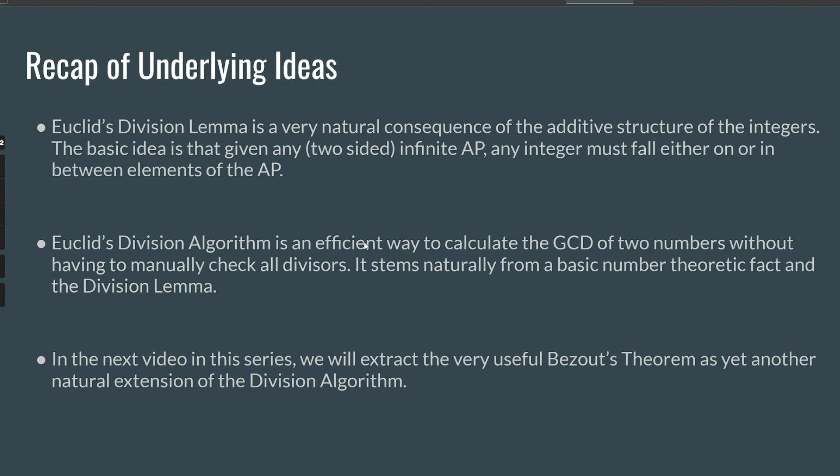And we'll try to recap all the underlying ideas. Euclid's division lemma is a very natural consequence of the additive structure of integers. The basic idea is that given any two-sided infinite AP, any integer must fall either on or in between elements of the AP. Euclid's division algorithm is an efficient way to calculate the GCD of two numbers without having to manually check all the divisors, which is what a naive algorithm would be. Just check all the common divisors and look at the maximum of that set. But the division algorithm that Euclid devised is actually far more efficient. It stems naturally from a basic number theoretic fact, which is that d divides a and d divides b implies d divides a minus b. We look at smaller and smaller numbers. And the division lemma guarantees us that we can keep doing this. In the next video in this series on number theory, we will extract the very useful Bezout's theorem as yet another natural extension of the division algorithm. It will be lovely, I guarantee you.